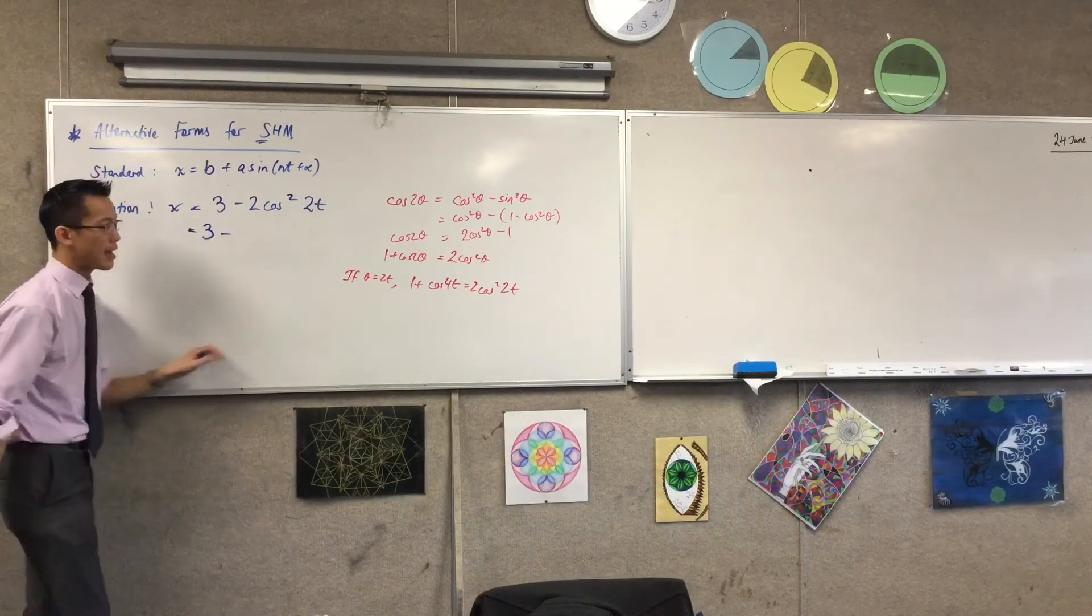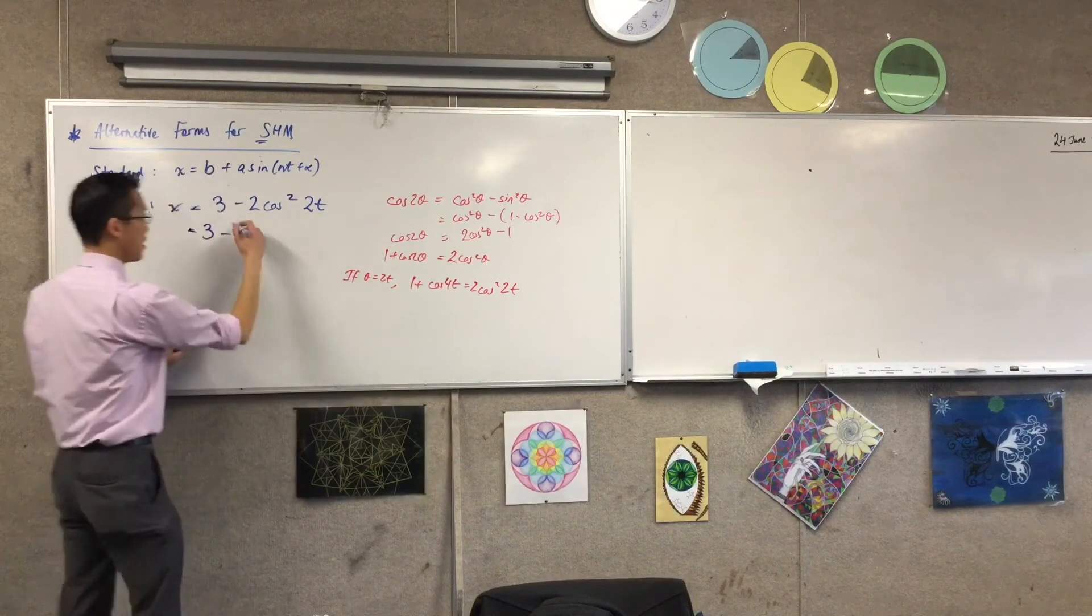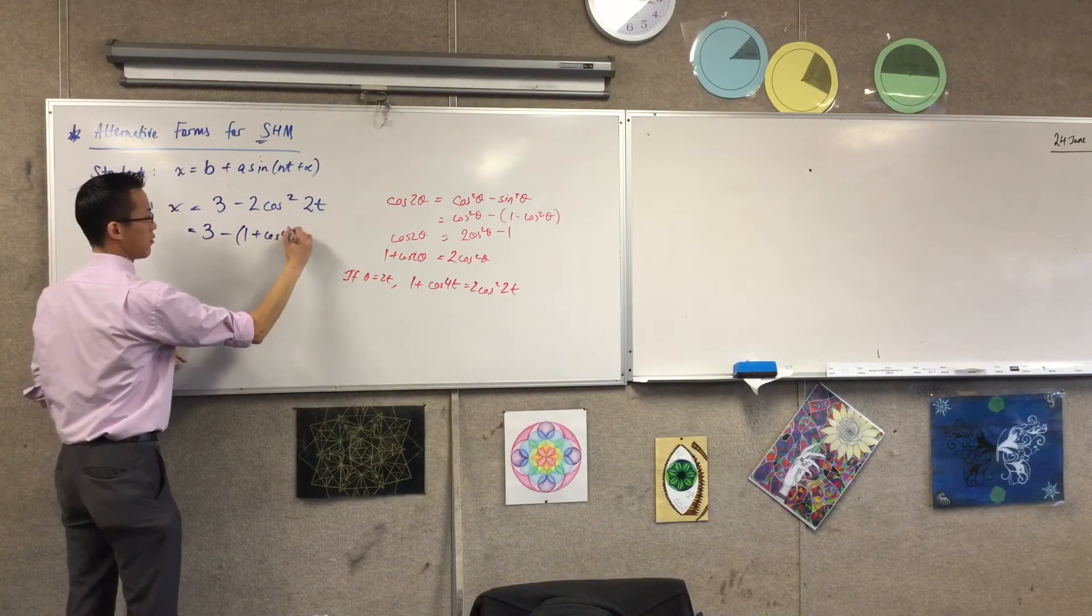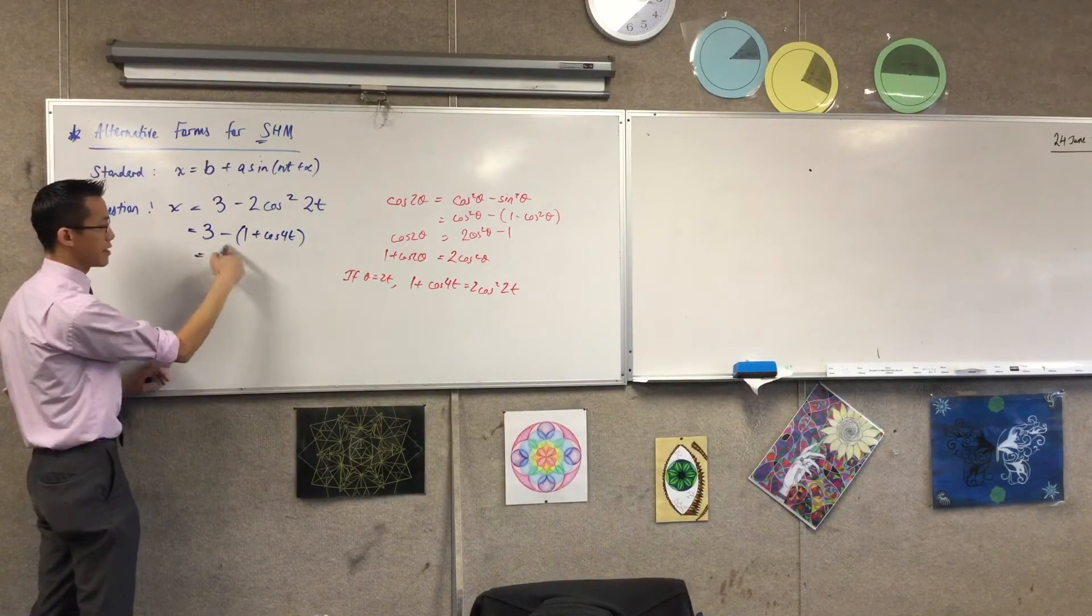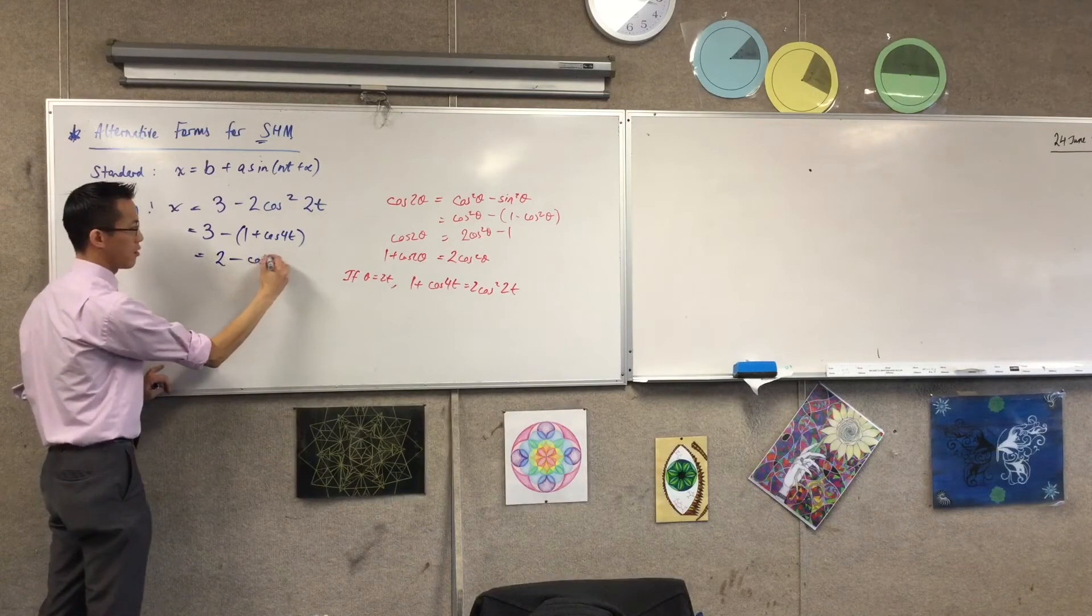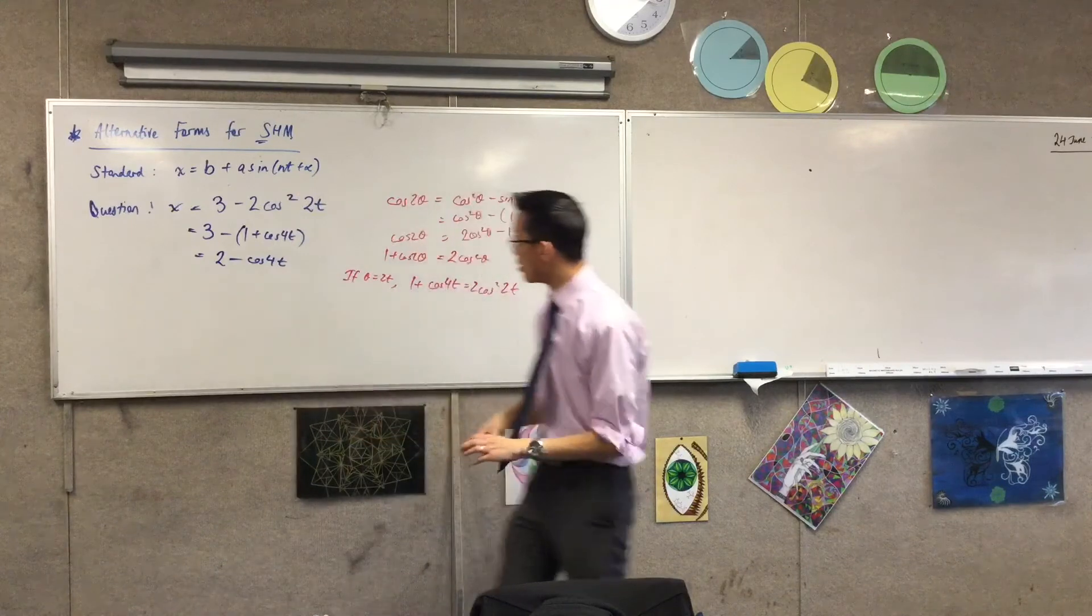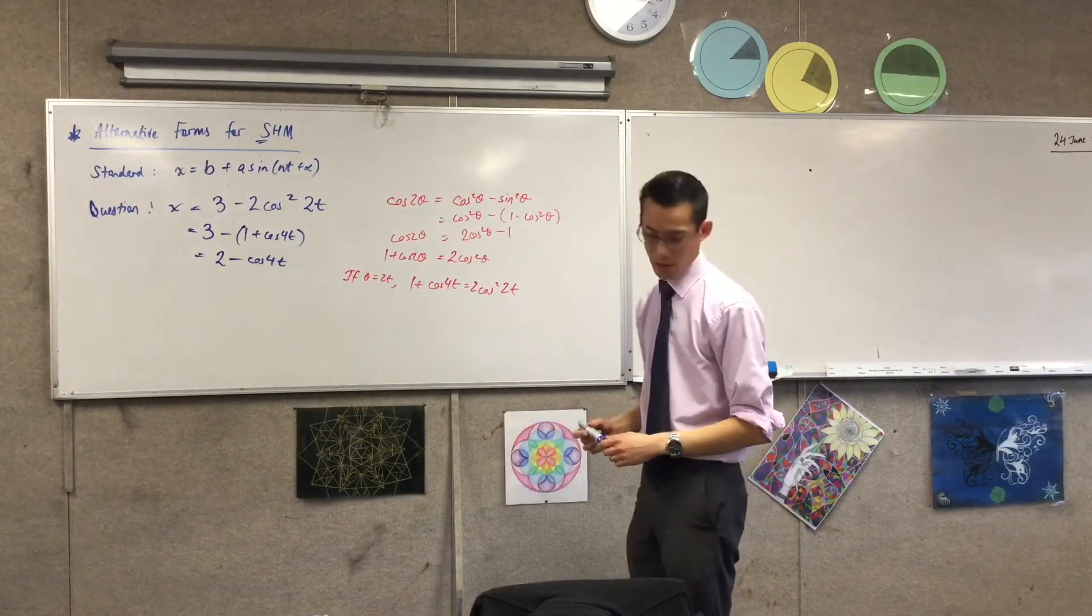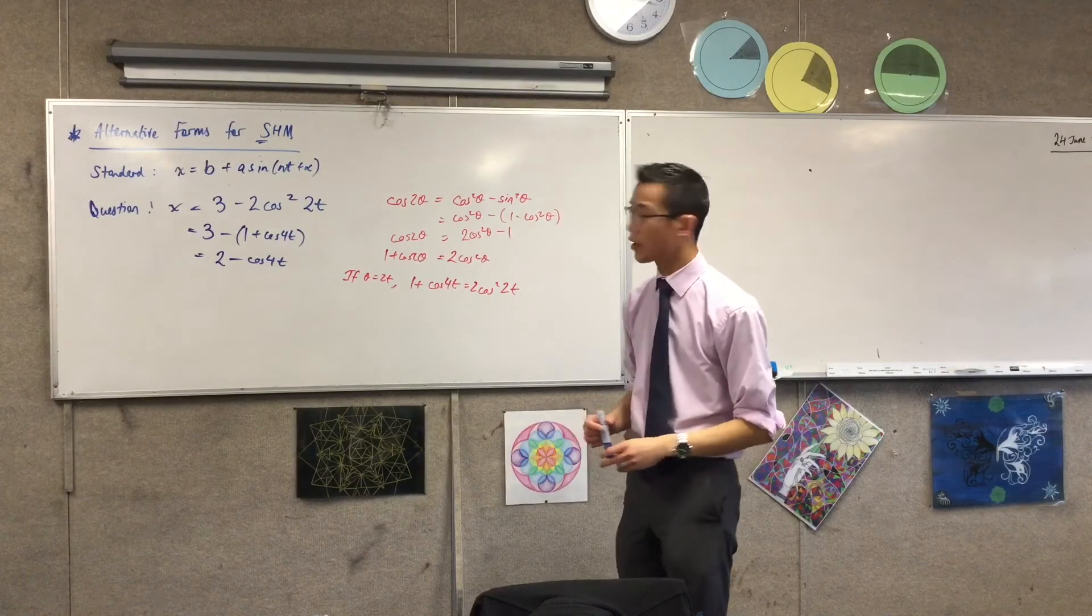If θ equals 2t, then I'm going to get 1 plus cos what? 1 plus cos 4θ equals 2 cos²(2t), which is the thing I wanted. I'm ready to actually now work with this thing. I've got 3, take away that. That's my 2 cos²(2t). So I'm just going to go 1 plus cos 4t, like so, and let's see, what have I got here? 3 take away 1 is 2, and that's a negative cos 4t, and I'm done.